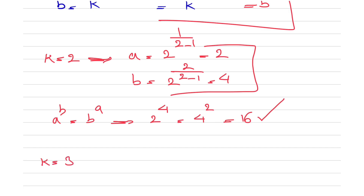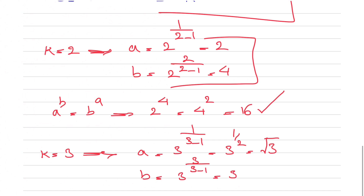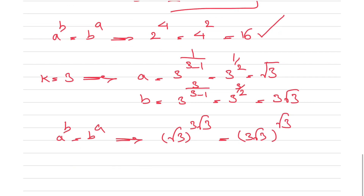Let's go with k equal to 3. Our a will be 3 to the power of 1 over 3 minus 1, which is 3 to the power of 1 half, or the square root of 3. And b will be 3 to the power of 3 over 3 minus 1, which is 3 to the power of 3 halves, written as 3 times the square root of 3. Verifying: square root of 3 to the power of 3 root 3 equals 3 root 3 to the power of root 3 — this one works too.